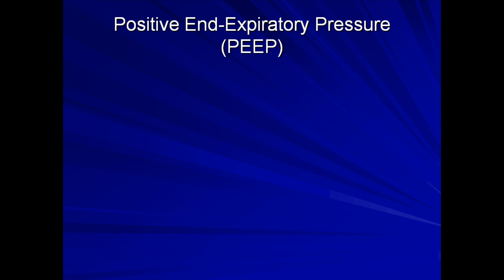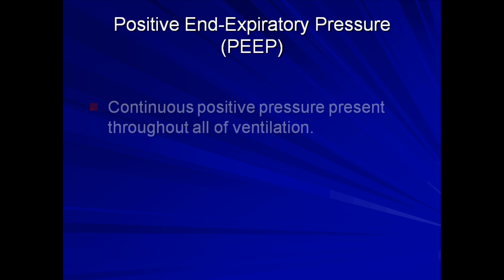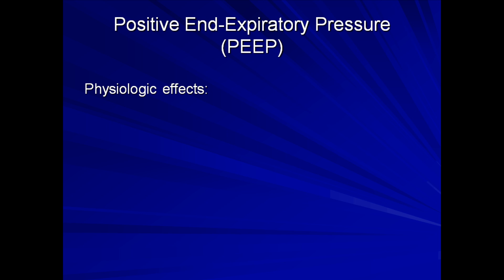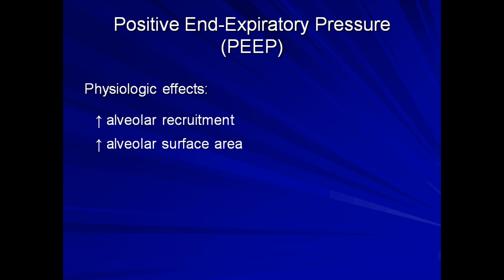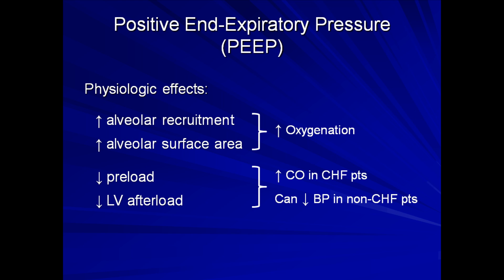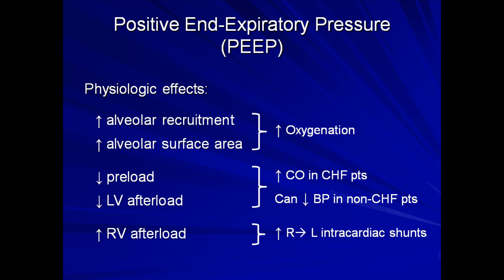Positive end expiratory pressure, usually referred to as PEEP, has been mentioned multiple times in this lecture series. Although conceptually simple, in practice it is a surprisingly complicated aspect of ventilation. In the basic sense, it is a continuous positive pressure present throughout all ventilation, relevant for just about all ventilator modes. The most clinically relevant physiologic effects are an increase in alveolar recruitment and an increase in alveolar surface area for gas diffusion, both of which work to increase oxygenation. PEEP also results in a decrease in cardiac preload and left ventricular afterload, which can increase cardiac output in patients with CHF and volume overload, though it can decrease blood pressure in other patients. Finally, PEEP increases right ventricular afterload, which can result in an increase in right-to-left intracardiac shunts in patients with certain forms of congenital heart disease.